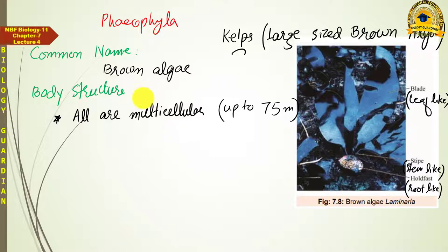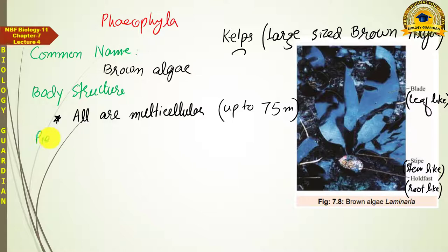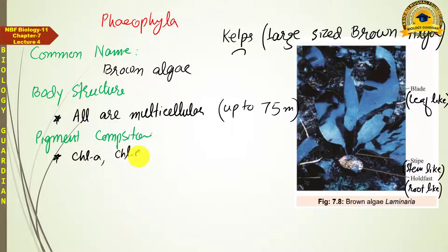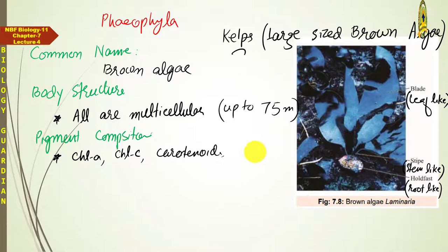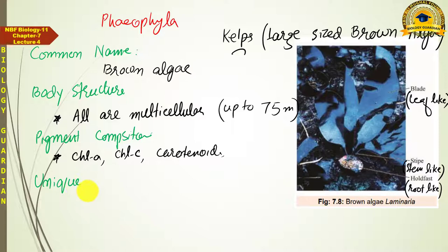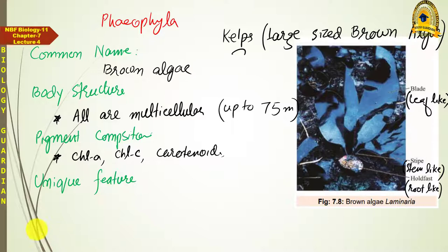Regarding the pigment composition of Brown algae, it is similar to the previous groups: Chlorophyll A along with Chlorophyll C, and carotenoids including fucoxanthin. Their unique features include having some extremely large-sized members called Kelps, whose body is differentiated into root-like, stem-like, and leaf-like structures.